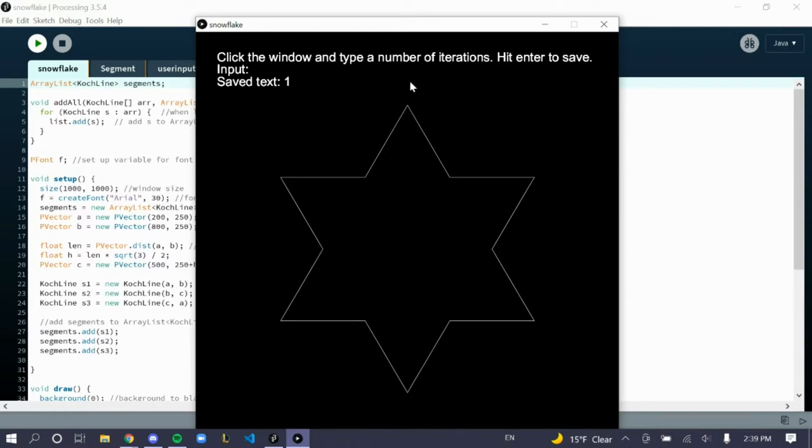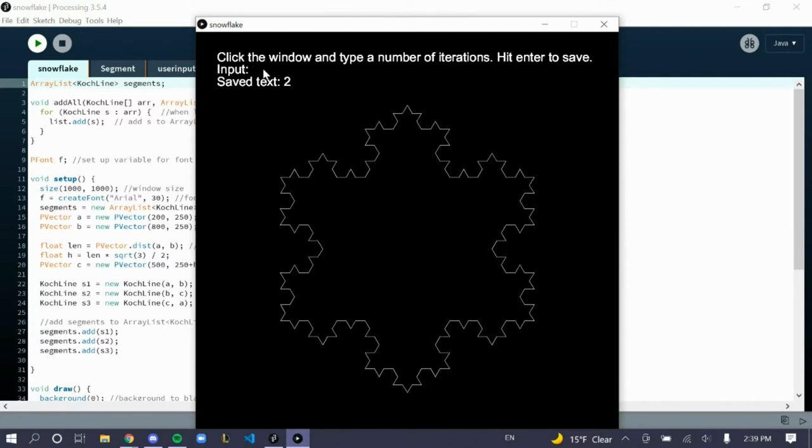I'll just jump directly to the first one by typing in one. Here, you can see that it follows the Koch line pattern, but all the sides are connected. The second and third iterations look like this, and you can see how the pattern continues, but it becomes smaller and smaller.